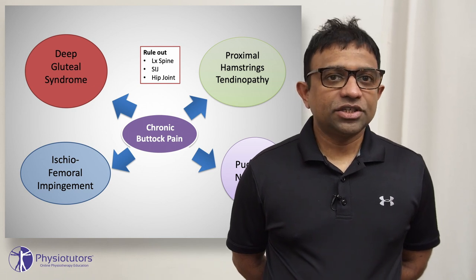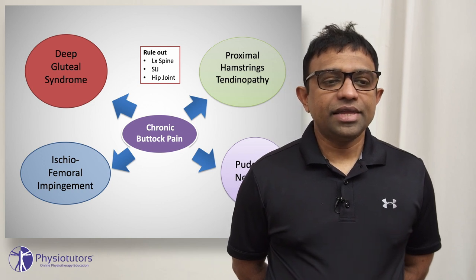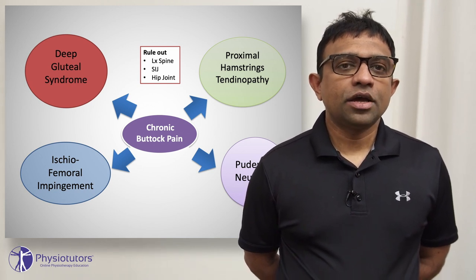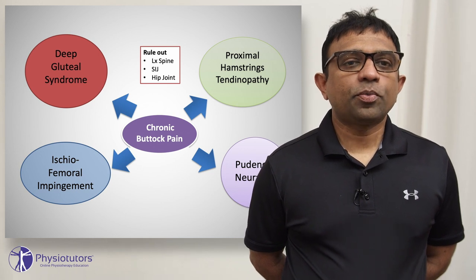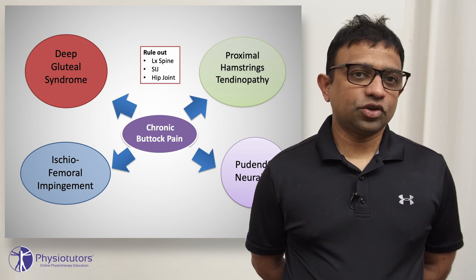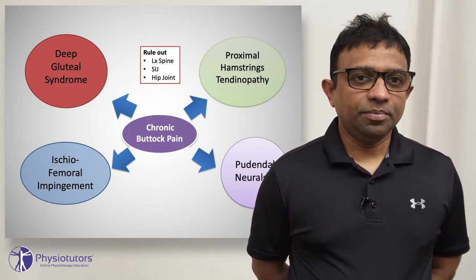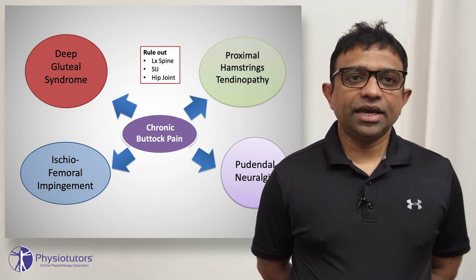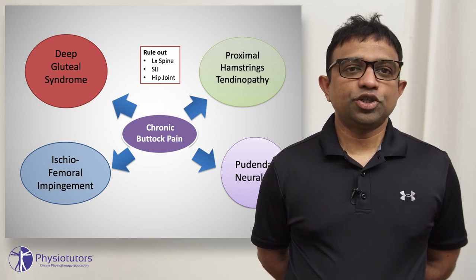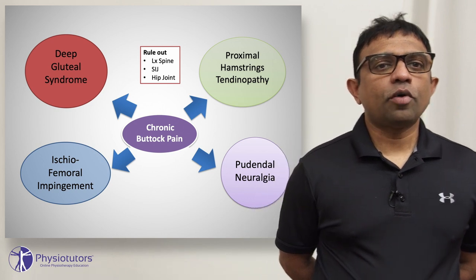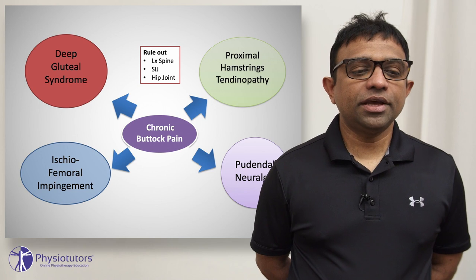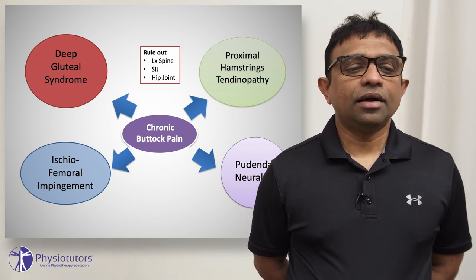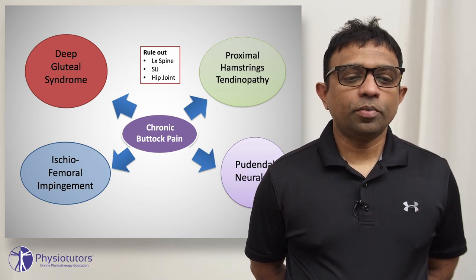To simplify it: always check the back and SIJ, then look at the hip joint. If neither is the cause, it's usually one of four local pathologies. By far the most common cause for chronic buttock pain in runners is proximal hamstring tendinopathy, which presents as pain around the sitting bone. There is also deep gluteal syndrome, which is slightly more proximal, ischiofemoral impingement, and pudendal neuralgia — a condition more commonly seen in cyclists that is usually managed by pelvic health physiotherapists. Proximal hamstring tendinopathy is by far the most common, and we'll go through its management in detail.